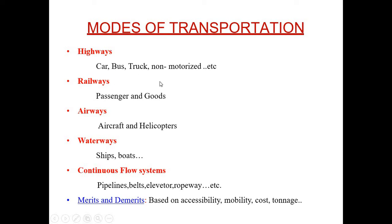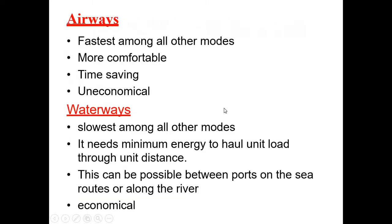Highways include cars, buses, trucks, and non-motorized vehicles like pull carts and rickshaws. Railways include passenger and goods trains. Airways include aircraft and helicopters. Waterways include ships and boats. There is also another mode of transportation called continuous flow systems, that is pipelines, bale elevators, and ropeways.